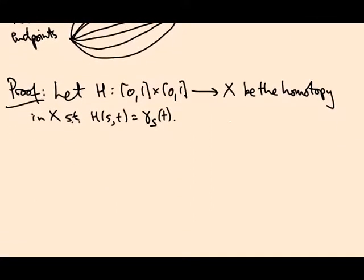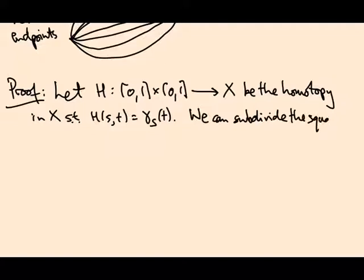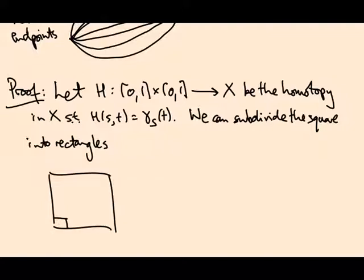Right. So I claim what we can do is we can subdivide the square into rectangles which I'm going to label R_ij, maybe R_i is the coordinate in that direction and j is the coordinate in that direction. So this would be R_11, R_21, R_31, R_41, R_12, etc.